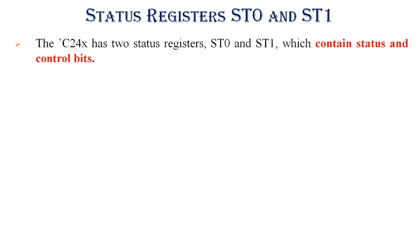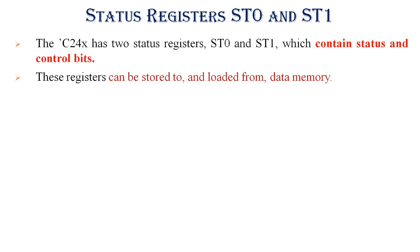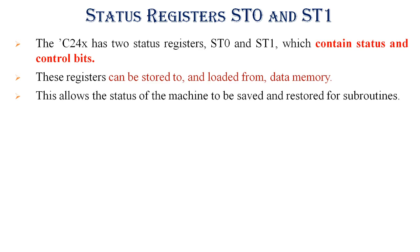C24x has two status registers named ST0 and ST1 which contain status and control bits. Status registers can be stored to and loaded from data memory. This allows the status of the machine to be saved and restored for subroutines.